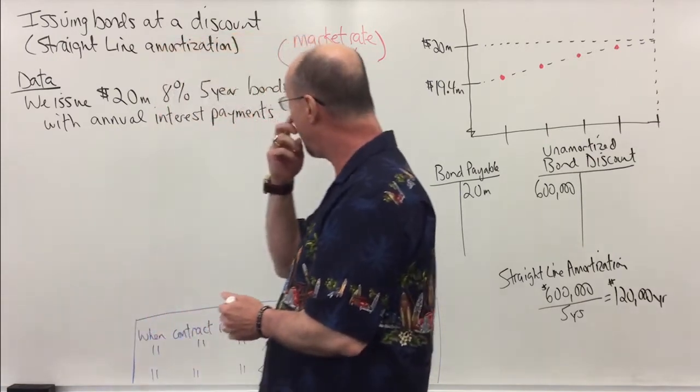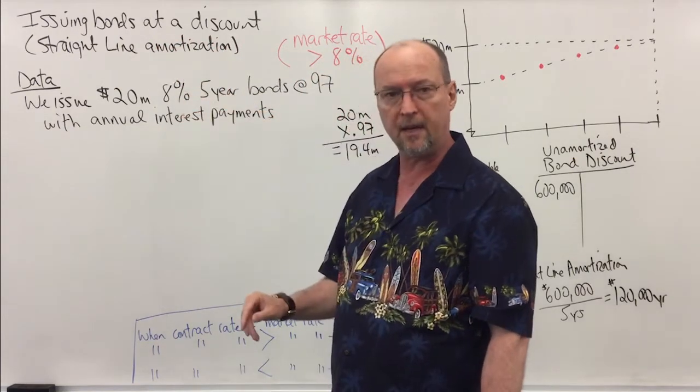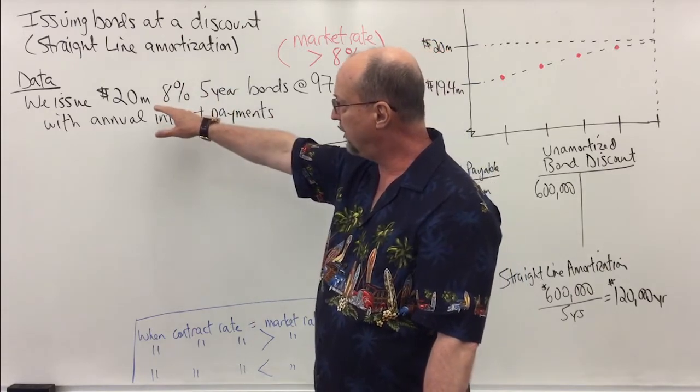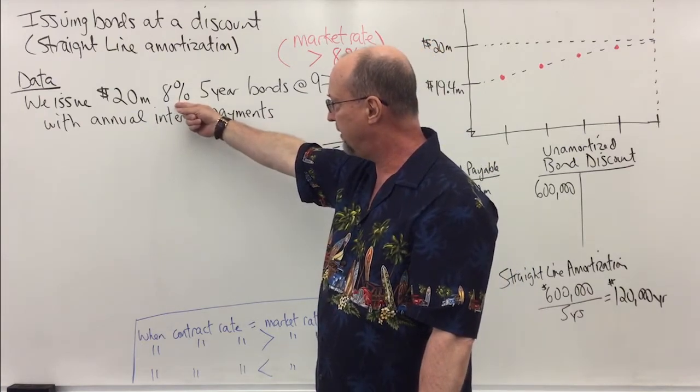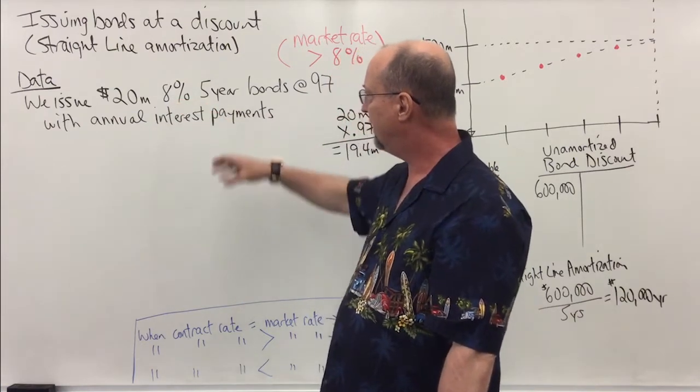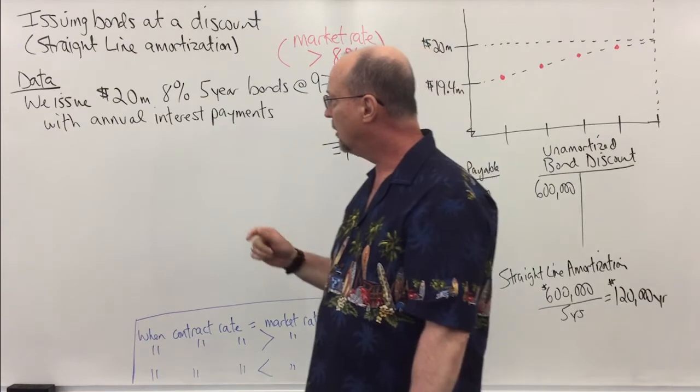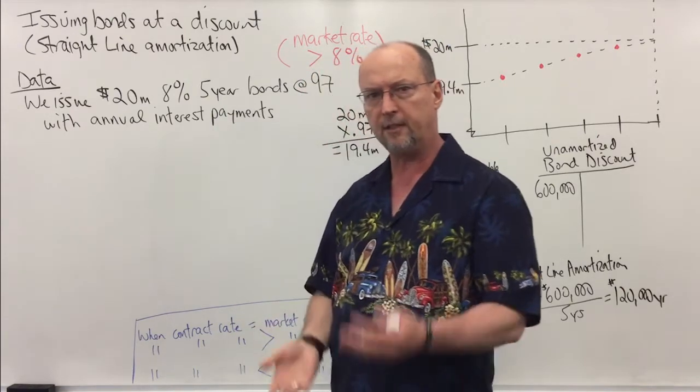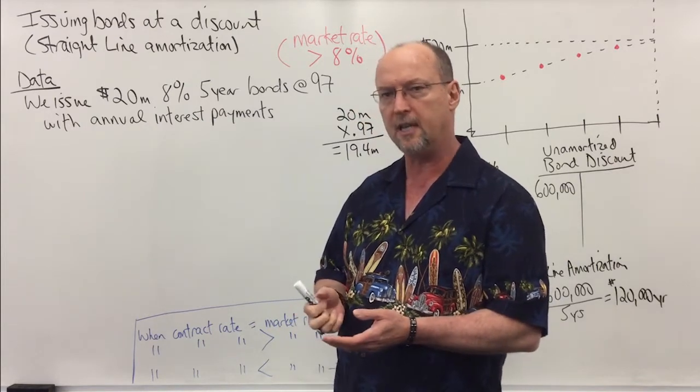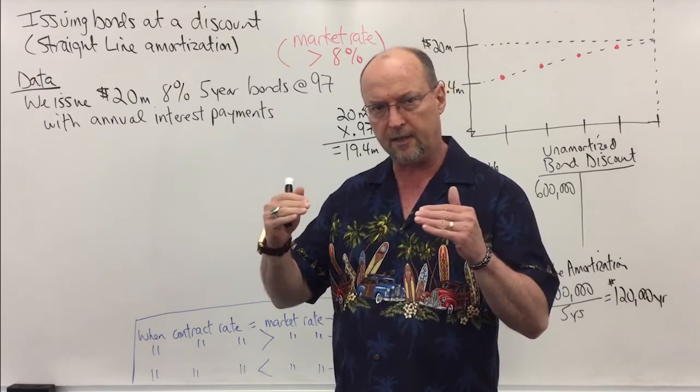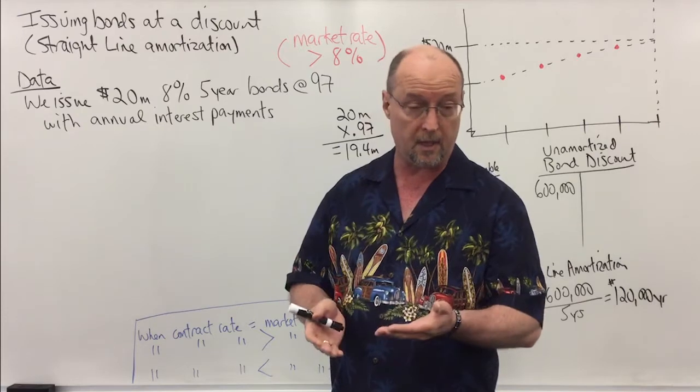Now here's the data we're going to work with, and we're going to be amortizing the bonds using the straight-line method. We're going to issue $20 million of face value bonds at a contract rate of 8%, and these bonds will mature in five years. Now the bond market interest rates fluctuate by the minute, so whenever you issue bonds you're never going to issue them where the contract rate and the market rate are identical. They're always going to be off by a little bit, which means we issue bonds at a discount or a premium.